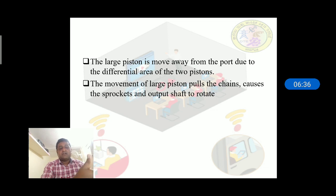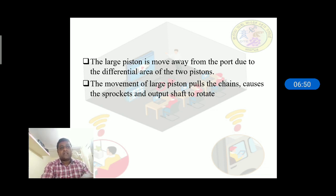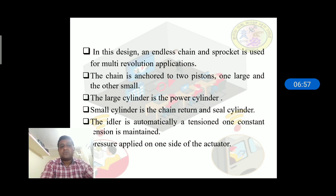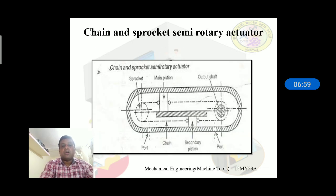For forward motion, rotation of the sprocket takes place. When pressure is applied in the opposite direction, the piston moves backward and the sprocket rotates in the reverse direction. This gives clockwise and anti-clockwise rotation depending on which side pressure is applied to the piston. This is the construction and operation of the chain and sprocket semi-rotary actuation system.